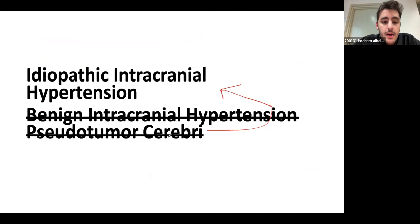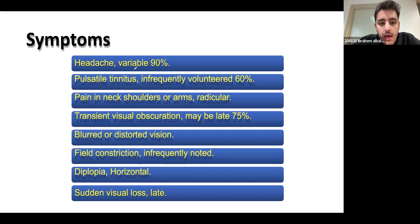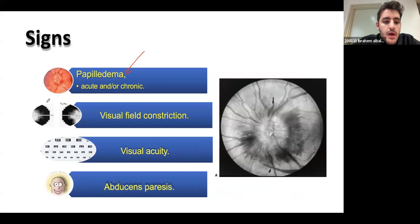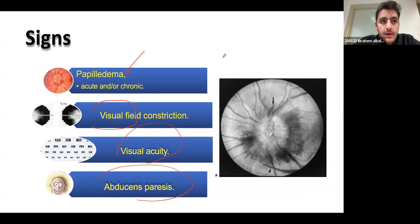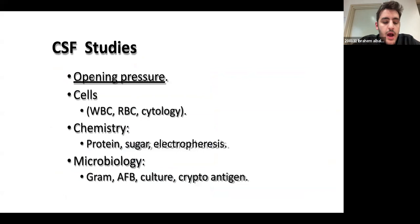Now let's talk about idiopathic intracranial hypertension (IIH). This happens when you have increased intracranial pressure but we don't know why — hence idiopathic. It presents with symptoms of increased ICP: headache, tinnitus if cranial nerves are affected, and visual symptoms. The most important sign is papilledema. Visual fields can be compromised along with visual acuity, and there may be abducens nerve paresis. Know that papilledema is a key sign of IIH.